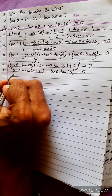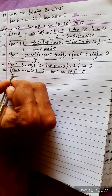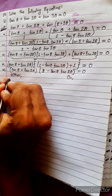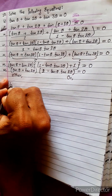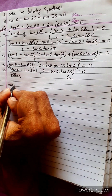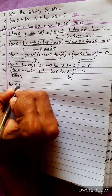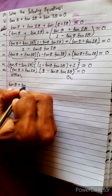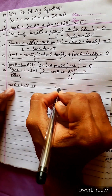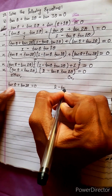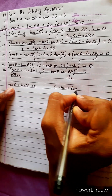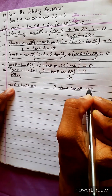Now, if we try to do anything further it will be the same as the original question. So we apply the either/or principle: either tan θ plus tan 2θ equals to zero, or 2 minus tan θ into tan 2θ equals to zero.